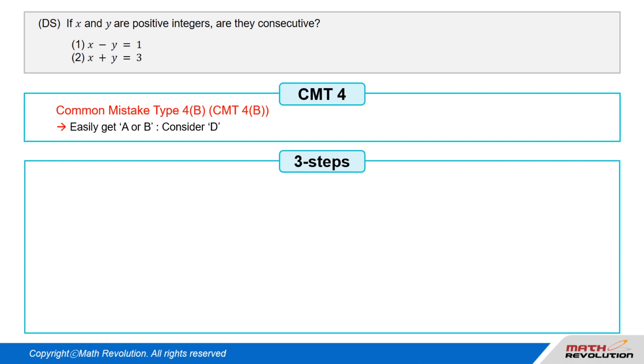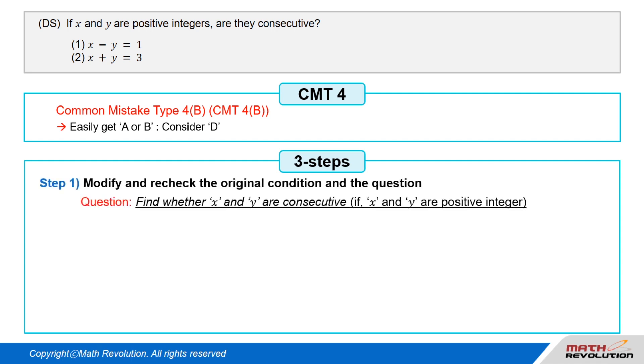Let's apply the three steps suggested previously. Follow the first step of the variable approach by modifying and rechecking the original condition and the question. We have to find out whether x and y are consecutive, if x and y are positive integers. Let's look at the information from the question prompt or the original condition. This is an integer question, and therefore one of the key questions.